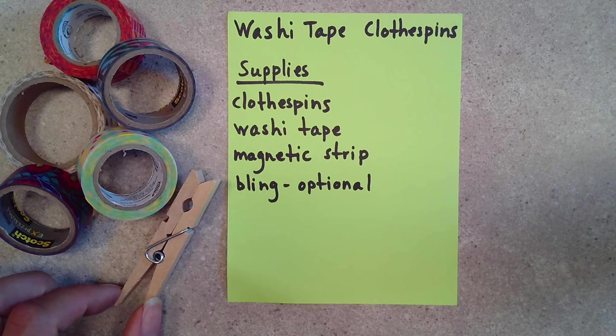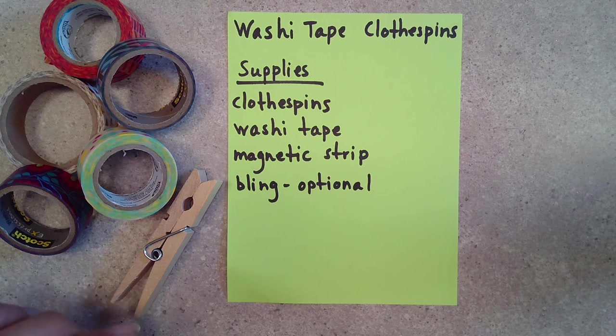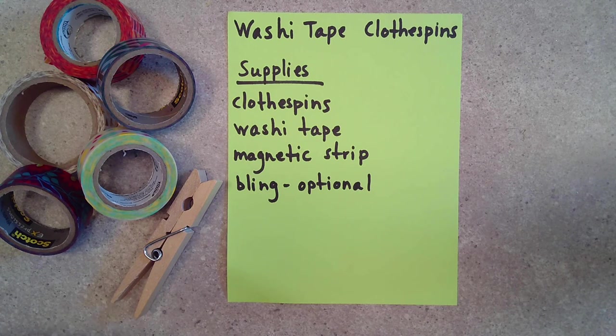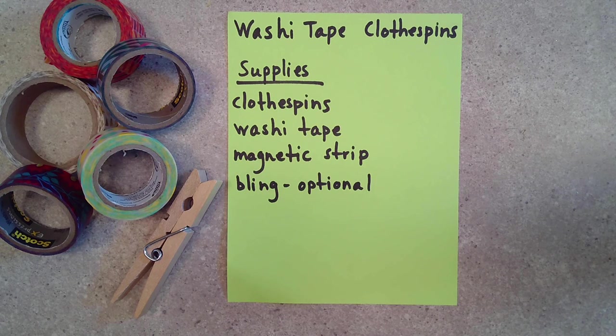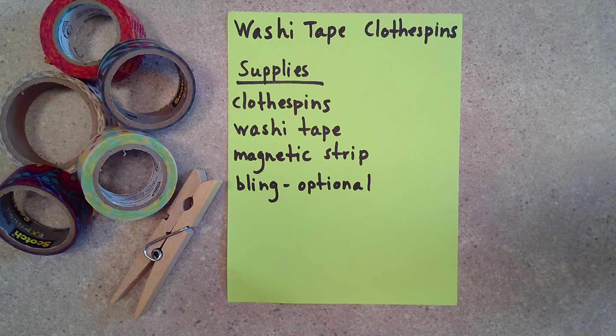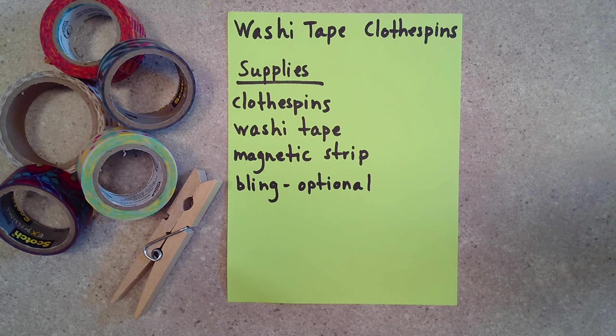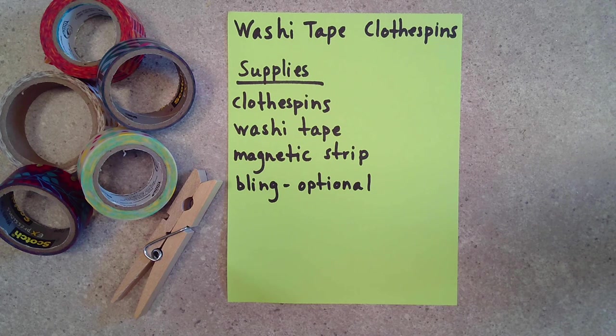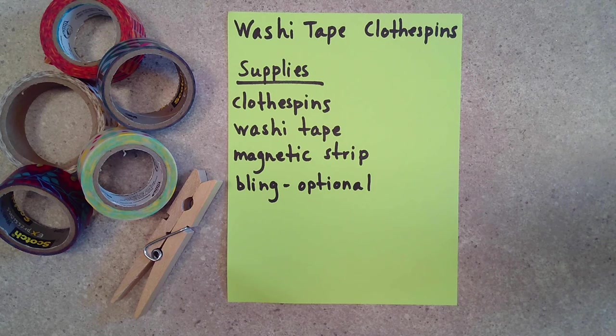Now some of these supplies you might not have on hand, so what I decided to do is create what I call a grab-and-go or a teen grab-and-go just for teens. So if you really like this craft and maybe you don't have clothespins or washi tape laying around the house, I'm going to put all of these supplies together for you. Just stop in the library, grab your kit, and you have everything that you need to make your washi tape clothespins.